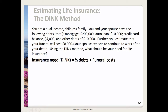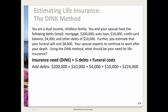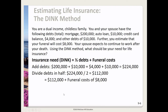Again, you can divide each debt separately then add them, or add all debts and divide by two. Adding the mortgage, auto loan, credit card, and other debts gives $224,000 total. Dividing by two gives $112,000 for half the debts. Adding the $8,000 funeral costs gives a total insurance need of $120,000.